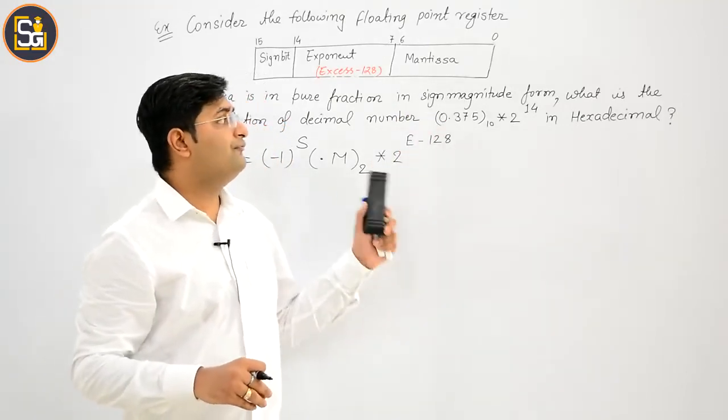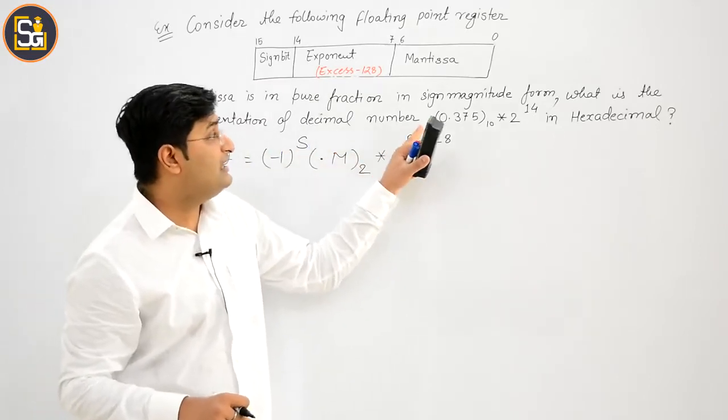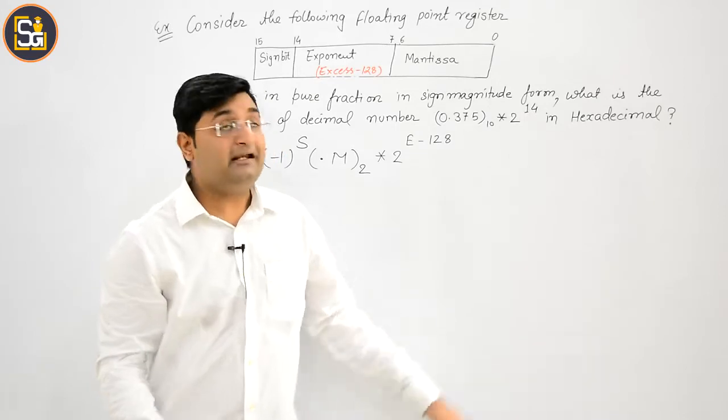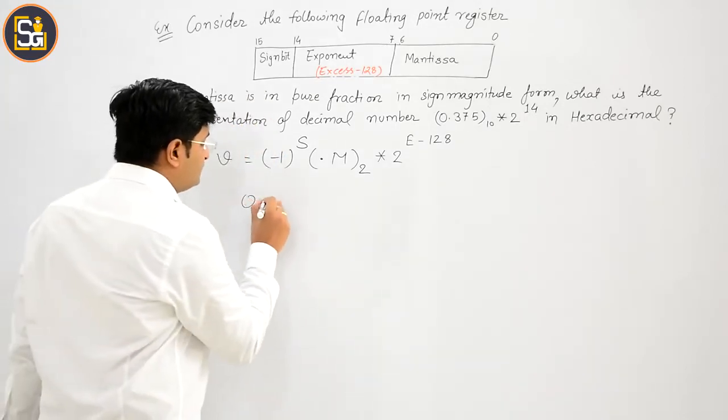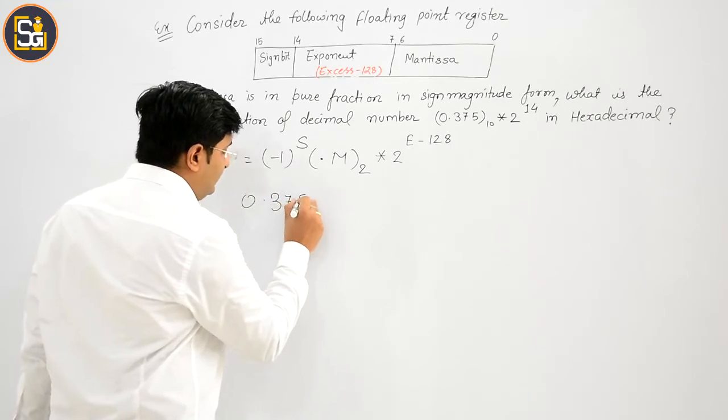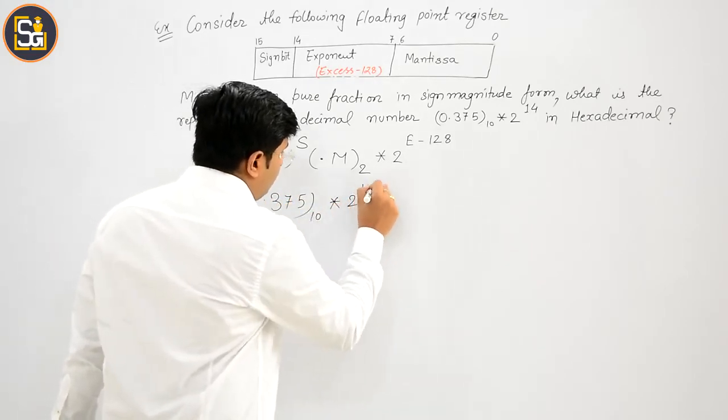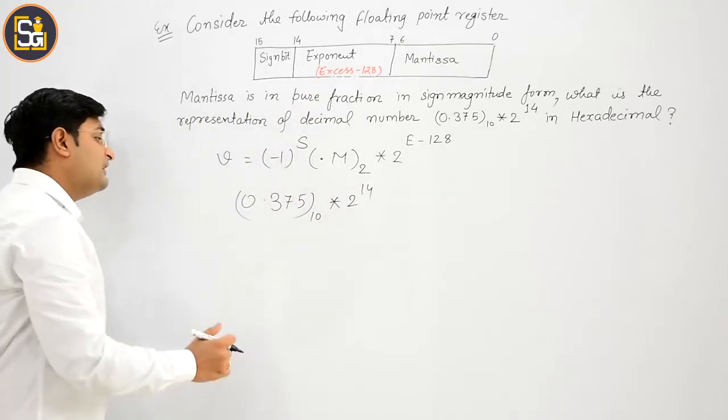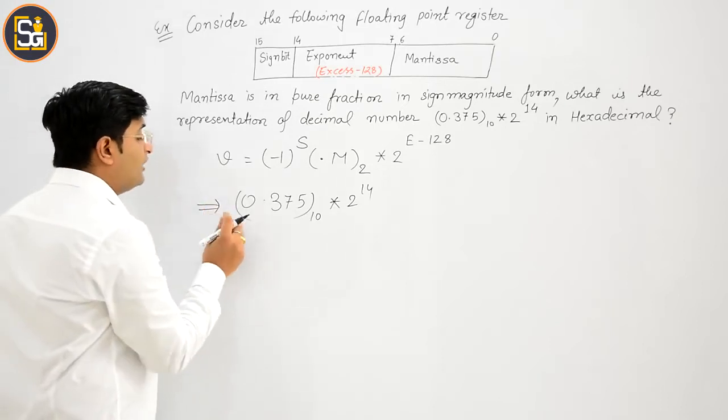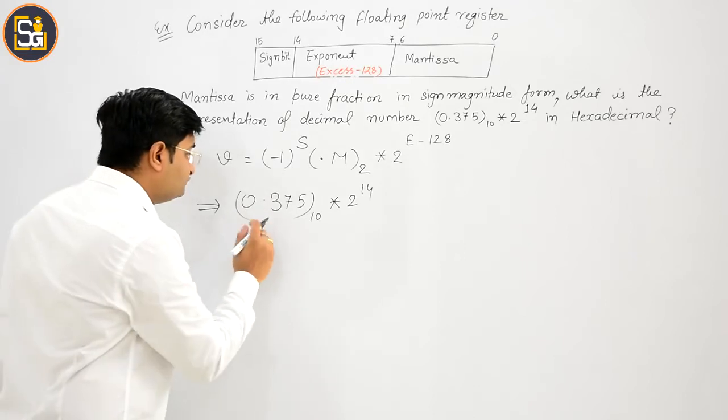In signed magnitude form, what is the representation of decimal number in hexadecimal? ठीक है. आपको 3, 7, 5 into 2 की पावर 14. इस number का, इस register में जब हम represent करेंगे, तो उसका आपको hexadecimal pattern चाहिए. ठीक है.